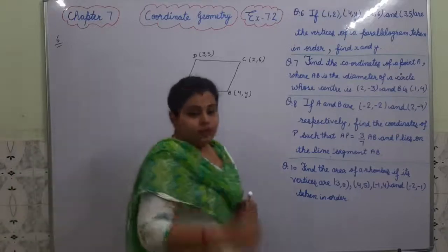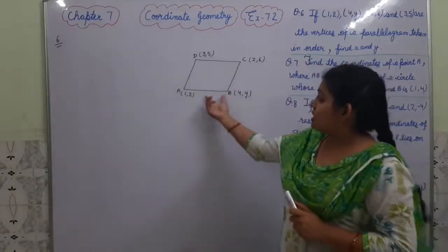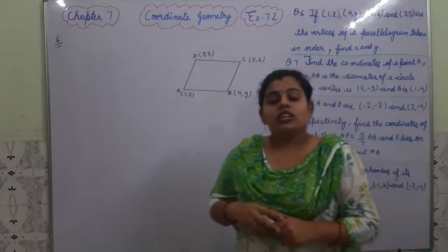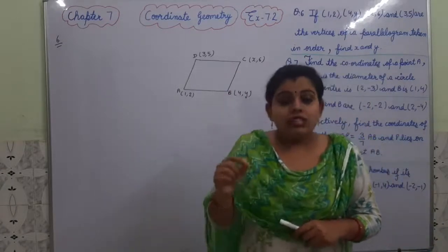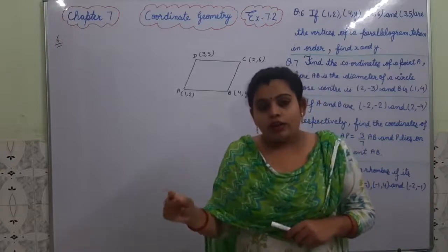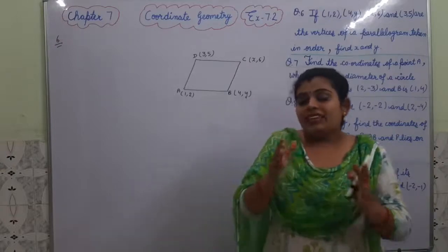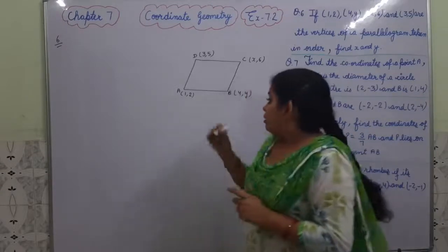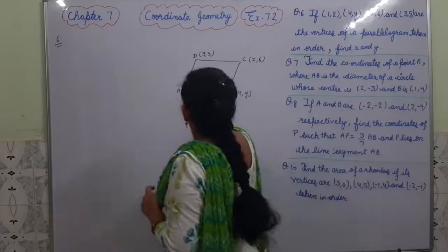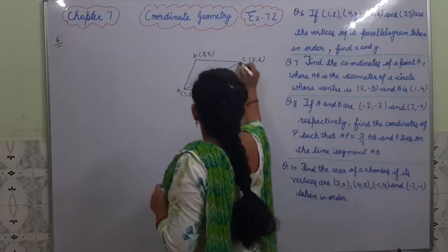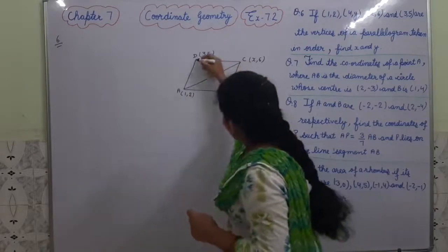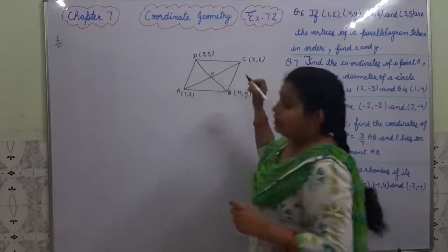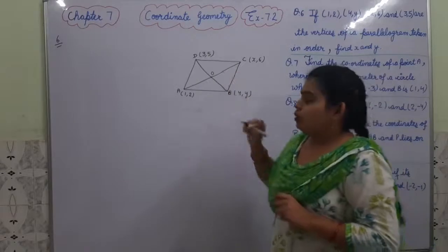Dear students, there are two methods. You can use the concept of equal sides. The second property is that diagonals of a parallelogram bisect each other — bisect means dividing into two equal parts. We have drawn diagonals: AC is one diagonal and BD is the other diagonal, and they are intersecting and bisecting each other at point O.